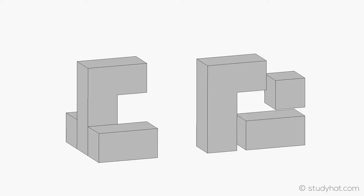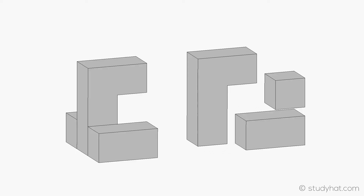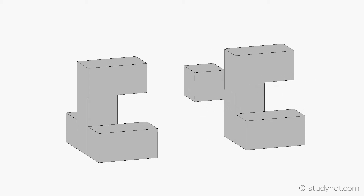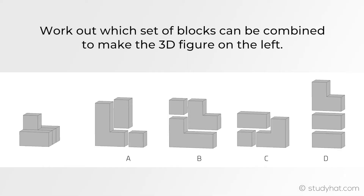There is a figure on the left and a figure on the right. The shapes on the right can be combined to make the figure on the left. They all come together — one shape moves to the back and slowly it all falls into place. This question is all about visualising how 3D shapes get combined. It says: work out which set of blocks can be combined to make the 3D figure on the left. Think of it as addition but for 3D shapes.